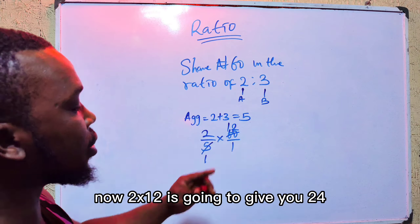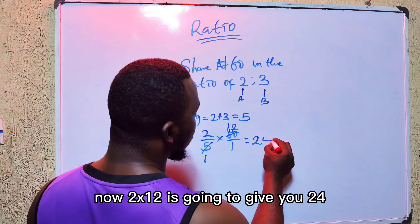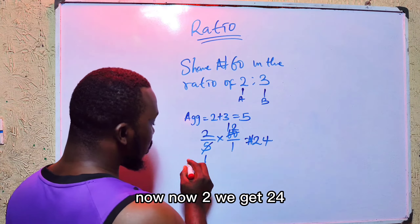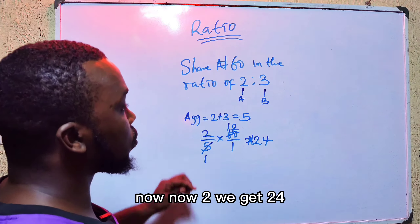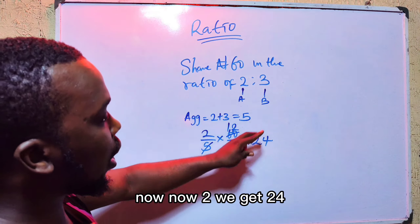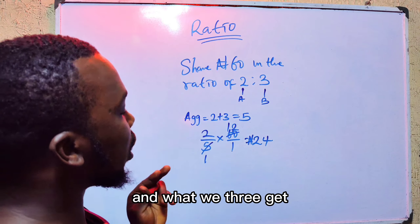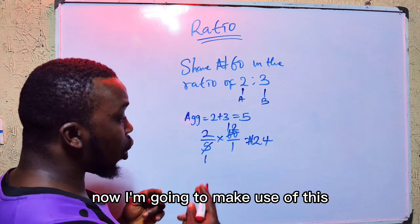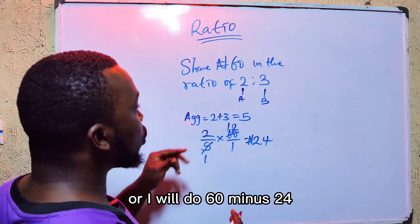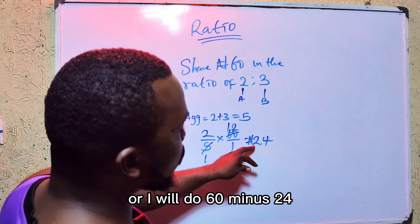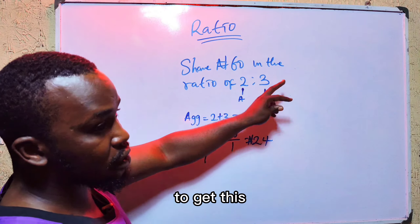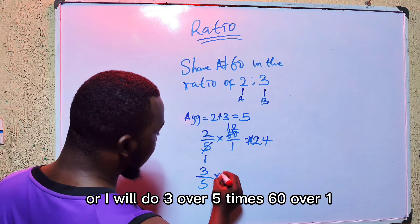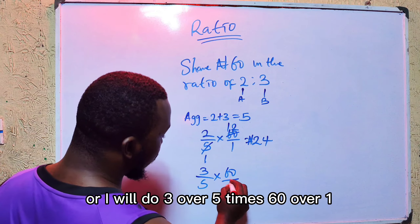Now let me give you a question about ratio — when you can use it to measure two items. Ratio is used to compare two numbers, to measure two numbers. That is the main work of ratio — to compare two numbers.